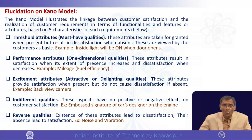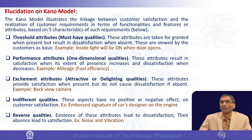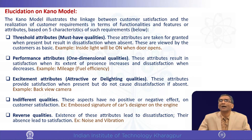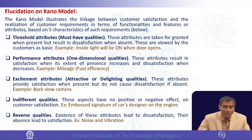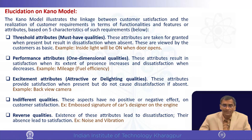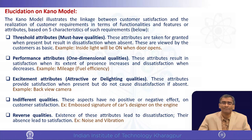Performance attributes are called one-dimensional attributes. One-dimensional means if it increases, people get satisfaction; if it decreases, people get dissatisfaction. For example, in a car, fuel efficiency or mileage — if it increases, people are happy; if it decreases, people are dissatisfied. Excitement attributes, also called attractive or delighting attributes, provide satisfaction when present but do not cause dissatisfaction when absent. It is a delighter — if it is not present, people would not mind much.